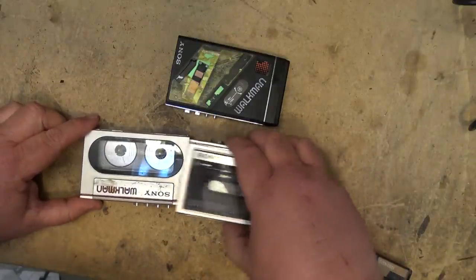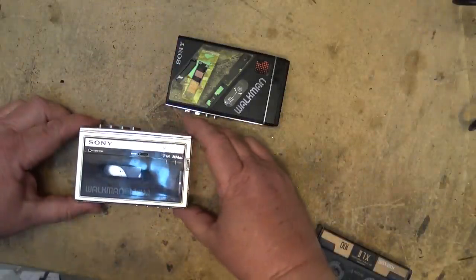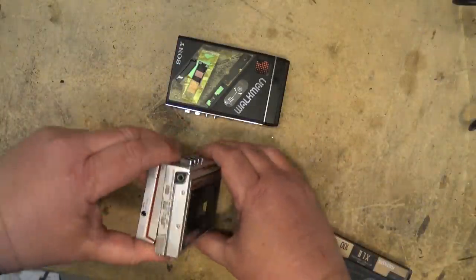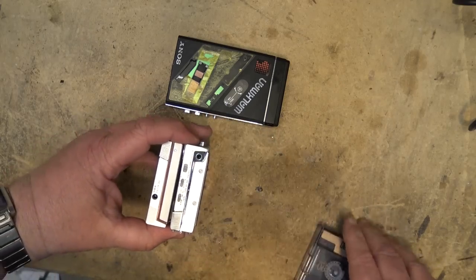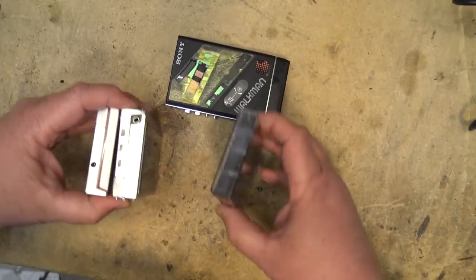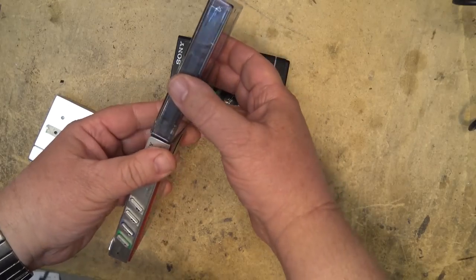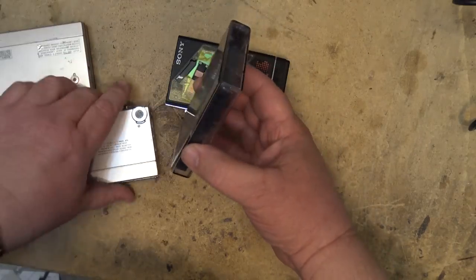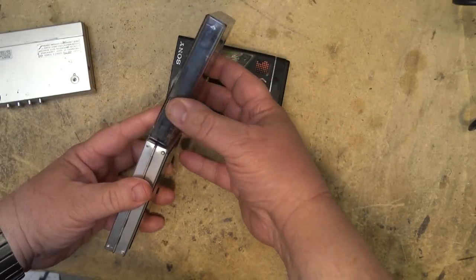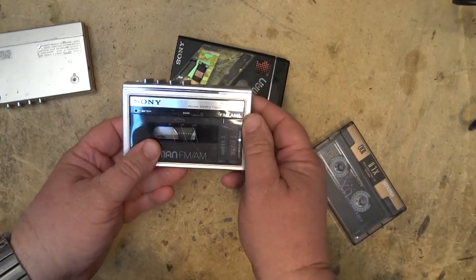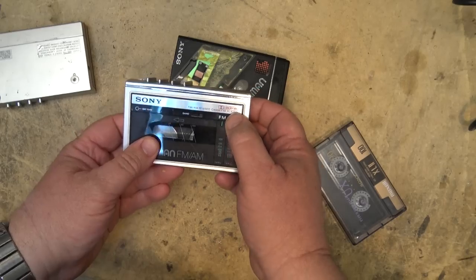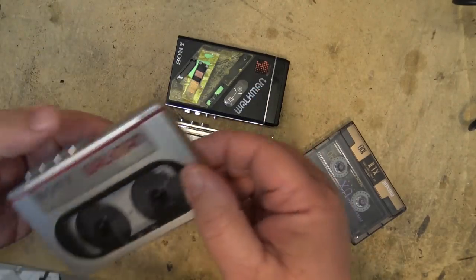Its brother is the WM-F10, which is the same size, but it's a little thicker. You can see that this one here is the same size as a cassette. This one's a little bit thicker than a cassette, and it added an AM-FM radio and Dolby noise reduction. I think this one had Dolby too, if I'm not mistaken.